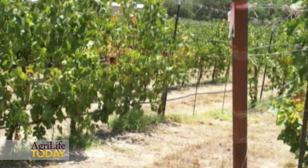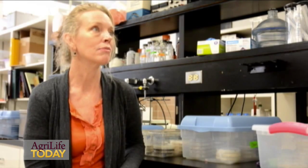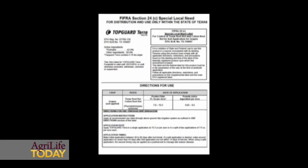The leaves stay attached to the vine, and in a matter of no time, it's dead. We put in an application with the Texas Department of Agriculture for what's called a 24C local needs registration, which allows, under restricted conditions, the use of flutriafol — which is the name of the fungicide — to control the disease in the vineyards.